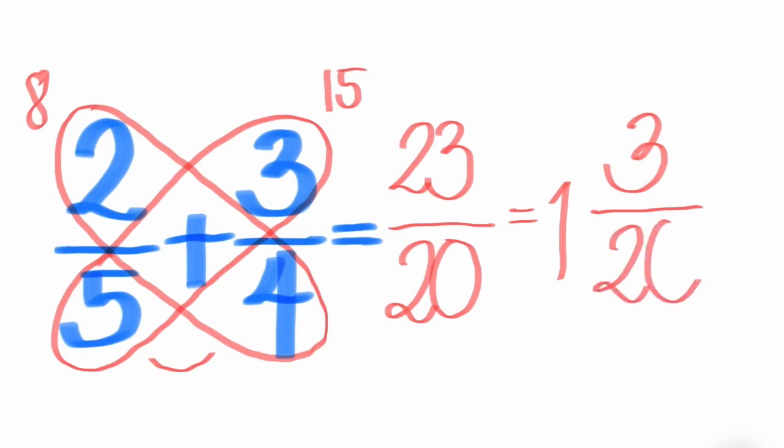If the fraction in the mixed number is not in its lowest term, we need to reduce them to lowest term. How? Think of a number that we can divide to both the numerator and the denominator, that is without a remainder.